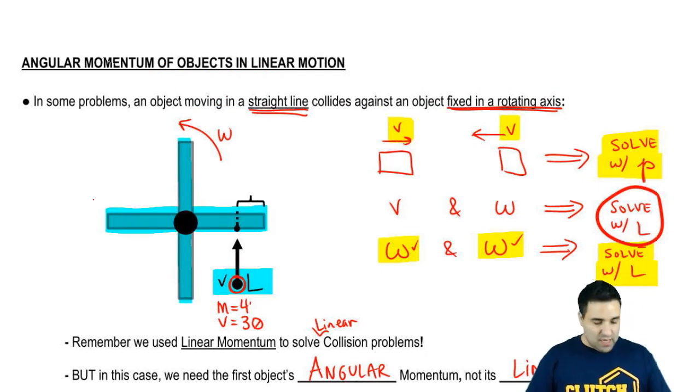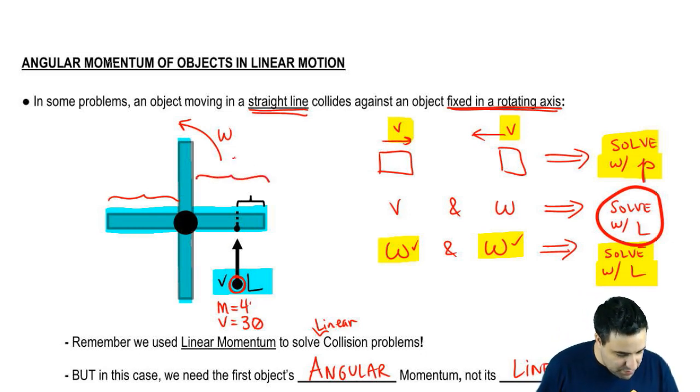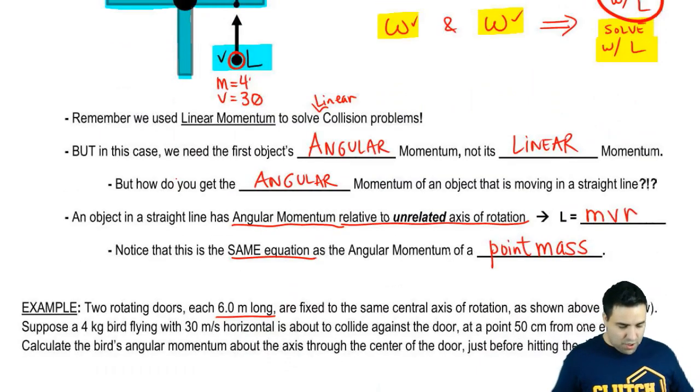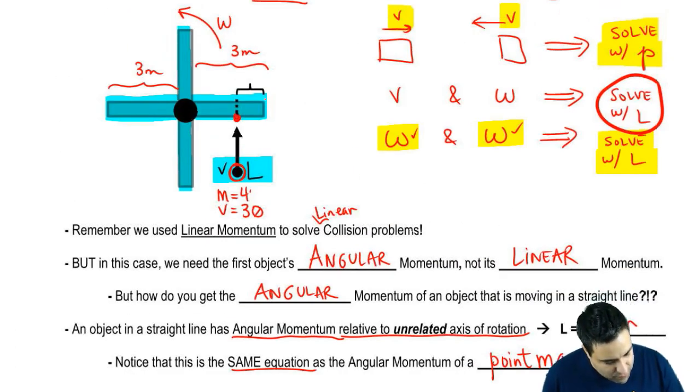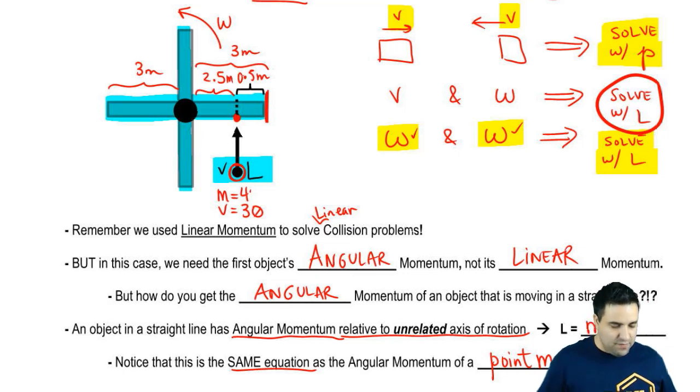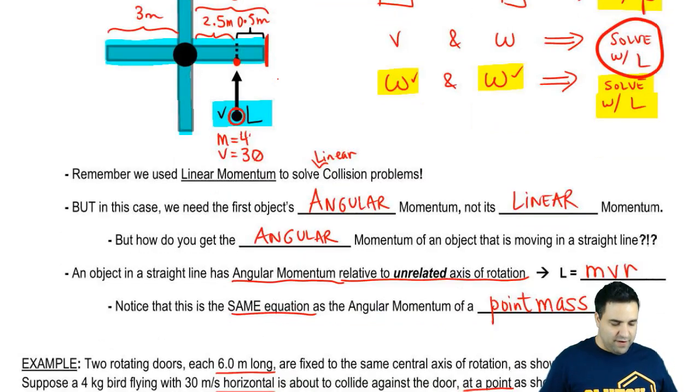Each one of these points here is three meters long. So you can think of this as a half a door. So it means that this whole thing here is three meters. Now the bird is colliding at 50 centimeters from one end. Obviously we're talking about this end and not this end. So this is 0.5 meters, which means that this distance here is 2.5 meters.